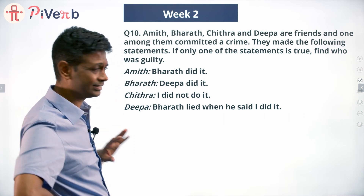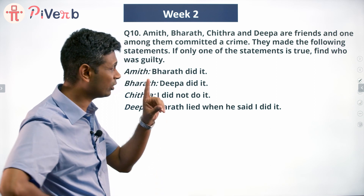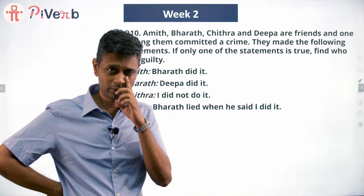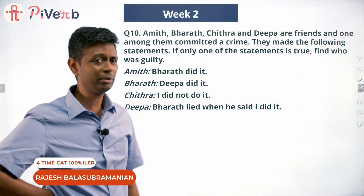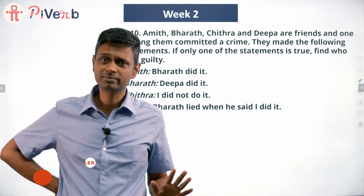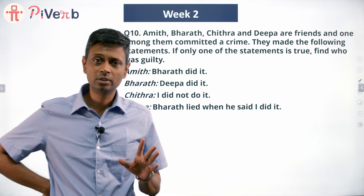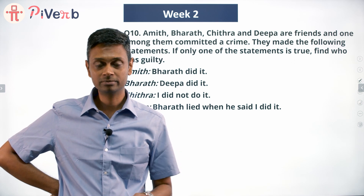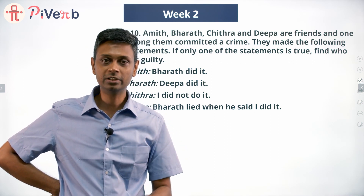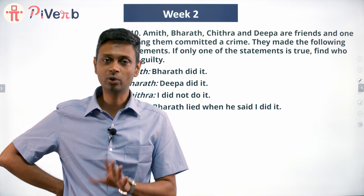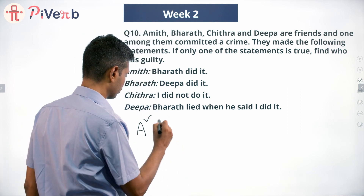The names are very friendly — A, B, C, D. Only one of them is true. These questions are very simple approach-wise. I'm going to say: let me assume only Amit is true — only what Amit is saying is true — and see if the statements are consistent. Then I'll go to B, then C, then D. First up: Amit speaks the truth.